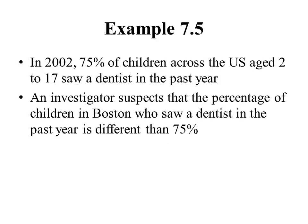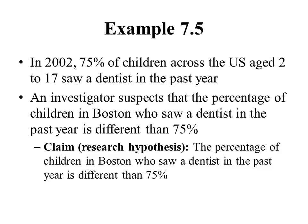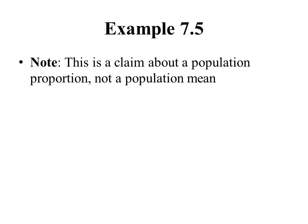Here we're dealing with a population of children in Boston, and we're making a claim about the percentage of them who saw a dentist in the past year — we think it's different than the national average of 75%. The claim or research hypothesis is that the percentage of children in Boston who saw a dentist in the past year is different than 75%. This is similar to Part A, but we're making a claim about a population proportion, not a population mean.